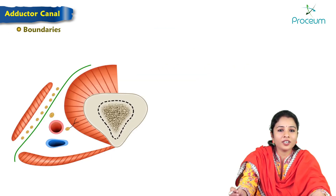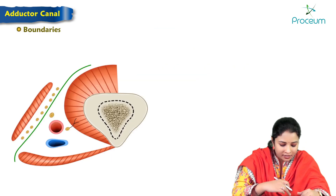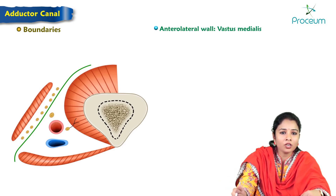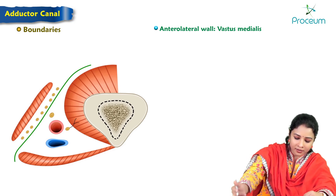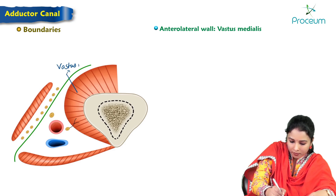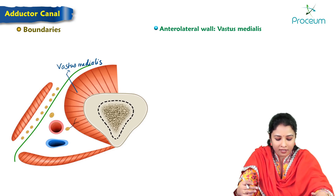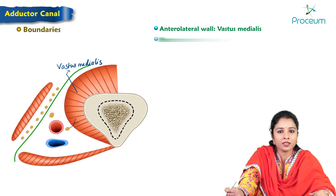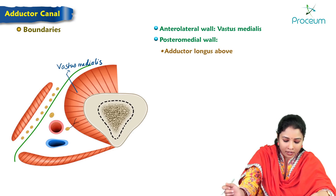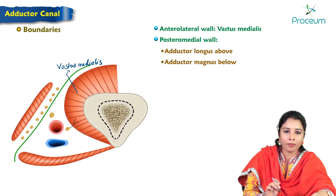The adductor canal is triangular in cross section. The anterolateral wall is formed by the vastus medialis. The posteromedial wall is formed by the adductor longus and adductor magnus — adductor longus above and adductor magnus below.